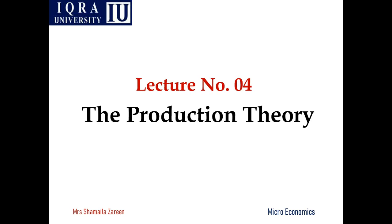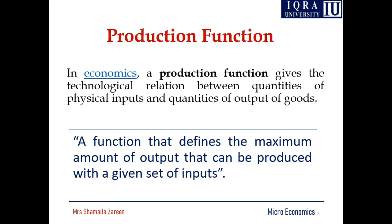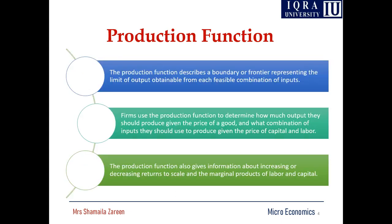Production and cost theory are interrelated, and we will discuss the cost of production later on. Here we are going to start production theory. Production is the transformation of inputs into outputs. Whenever you talk about the four factors of production, these are your inputs. You use those four factors of production and produce output. A production function defines the maximum amount of output that can be produced with a given set of inputs.